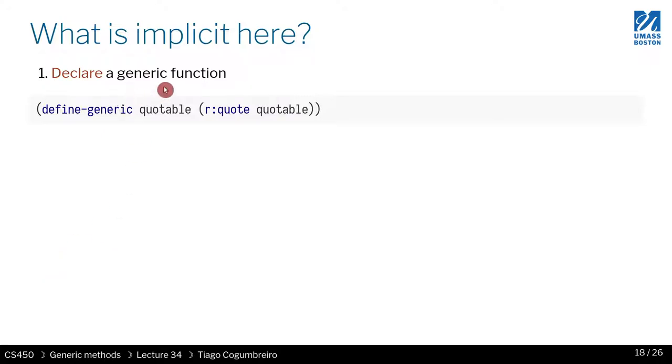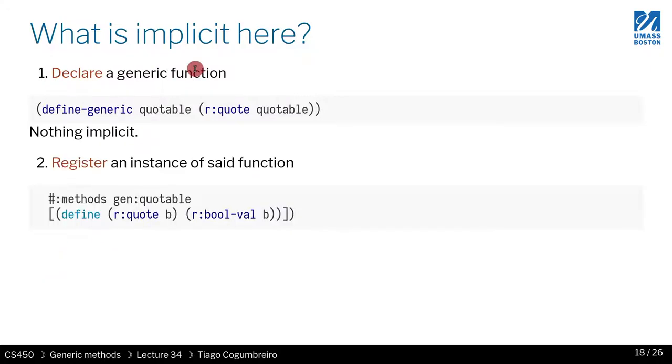So first, let's think about what is being implicit here. When we define a function, there is nothing implicit. Sorry, a generic function. There is nothing implicit. We simply say the name, and we define the parameter that is being dispatched on.